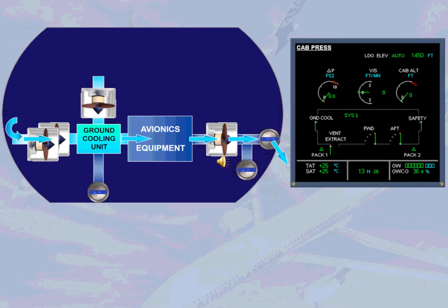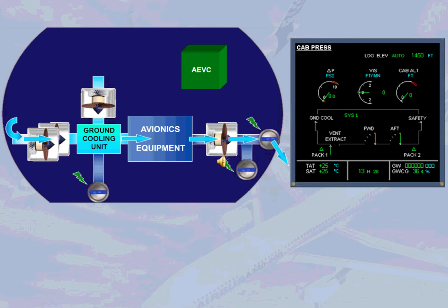The Avionics Equipment Ventilation Controller, AEVC, controls the avionics ventilation system and sends opening and closing signals to the overboard extract valves and the ground cooling valve.